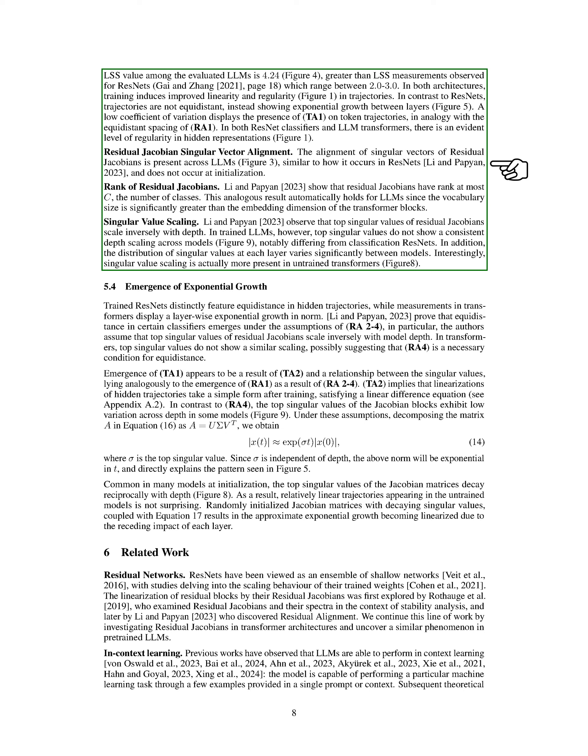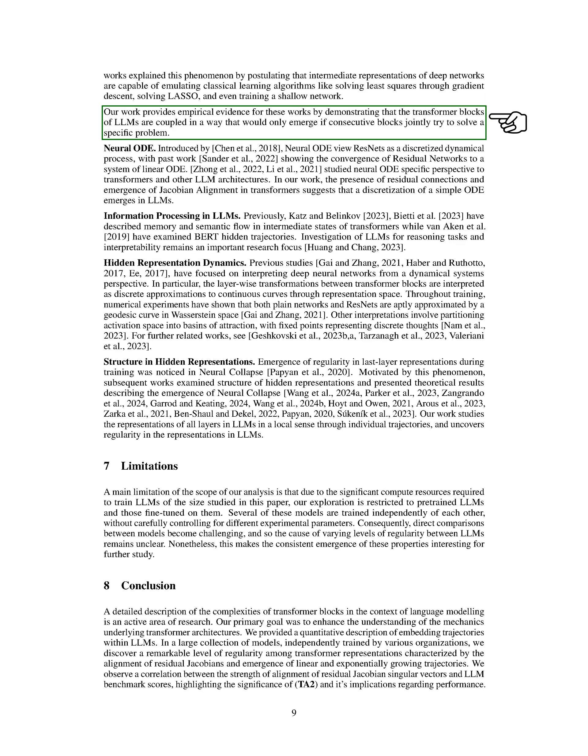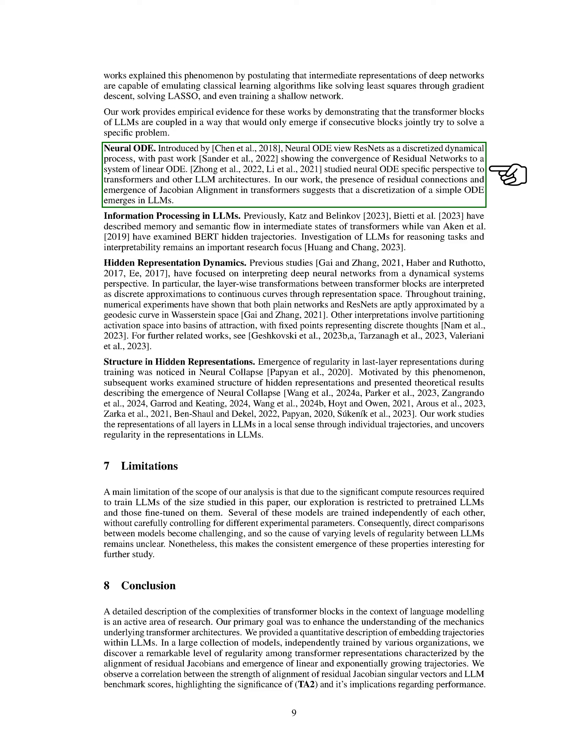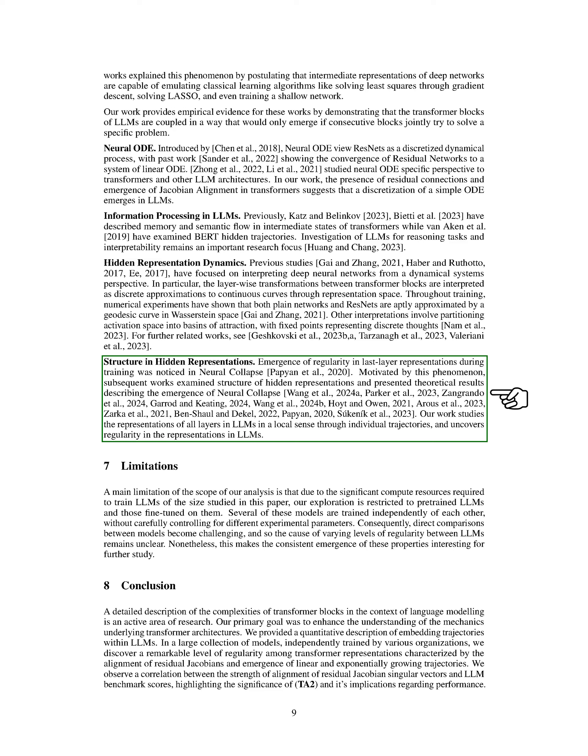The emergence of exponential growth in trained models is influenced by the linearization of hidden trajectories after training, which satisfies a linear difference equation. Our work builds upon previous studies on ResNets and explores the behavior of LLMs in terms of residual Jacobians and hidden trajectories. We provide empirical evidence supporting the concept of in-context learning in LLMs, where consecutive transformer blocks work together to solve specific tasks efficiently. Additionally, we investigate the presence of residual connections and Jacobian alignment in transformers, suggesting the emergence of a discretized ODE system in LLMs. Our findings contribute to understanding how training influences the properties of LLMs and highlight similarities and differences between LLMs and ResNets in terms of trajectory behavior and singular value scaling.